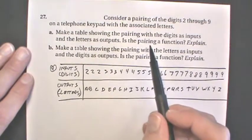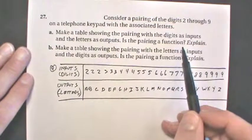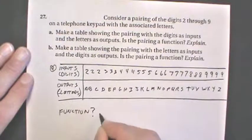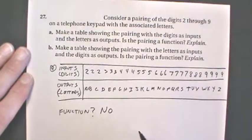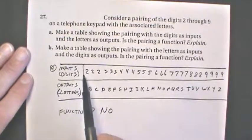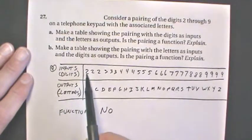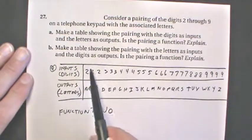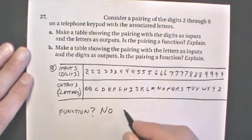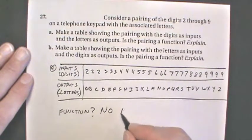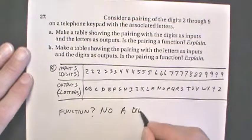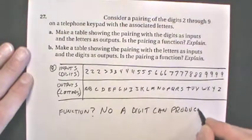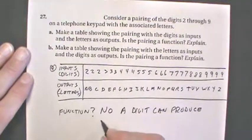Now the question is, is this pairing a function? The answer for a function is no. The reason is our inputs are not unique for the outputs. So if you have 2 gives you an A, and 2 gives you a B, 2 can give you a C. We do not have inputs that are unique for these outputs. So no, a digit can produce multiple outputs.